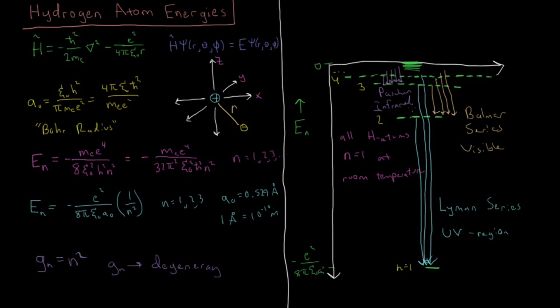So these energy separations are very large, so almost all hydrogen atoms are going to be in this ground n equals 1 state, which you probably know is the 1s orbital at room temperature.